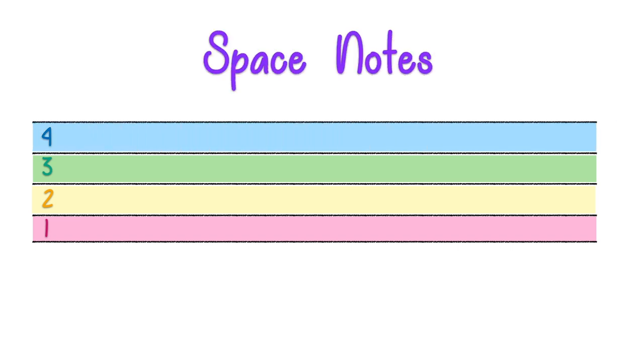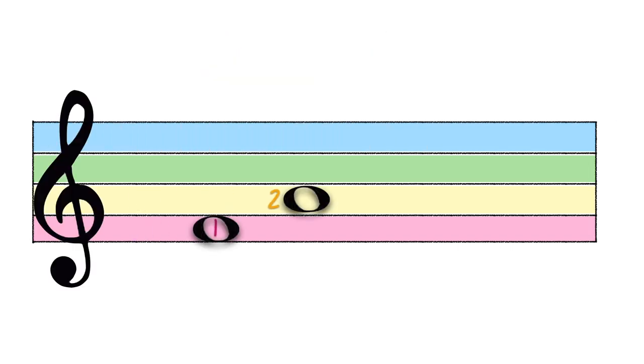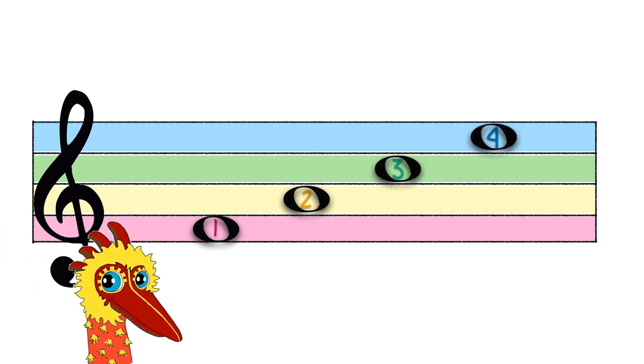Next! Notes that stay in the spaces 1, 2, 3, and 4 are your space notes. For the treble clef stave, the acronym for space notes is FACE. Huh? Yes, you heard me right! F-A-C-E FACE.